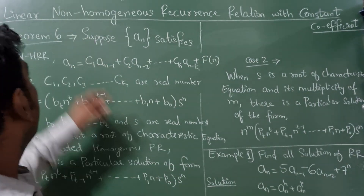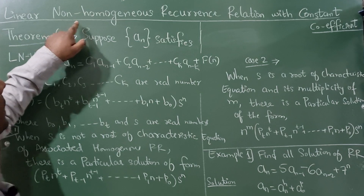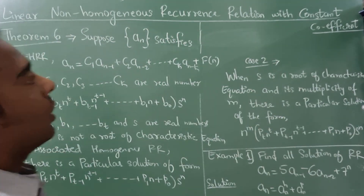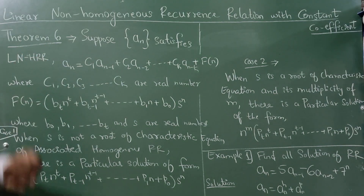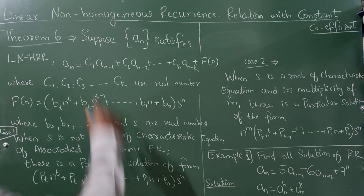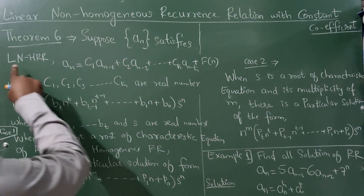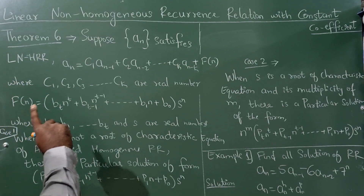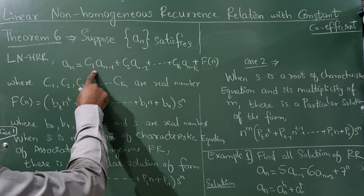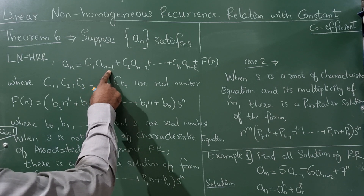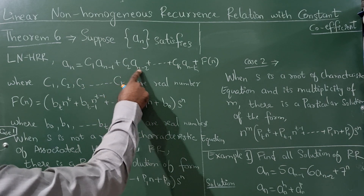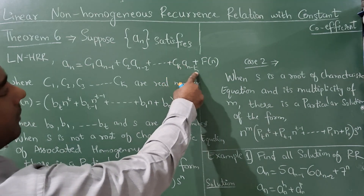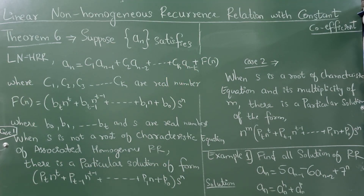Hello everyone, today I am going to explain linear non-homogeneous recurrence relation with constant coefficient, Theorem 6. Suppose a(n) satisfies the linear non-homogeneous recurrence relation: a(n) = c1·a(n-1) + c2·a(n-2) + ... + ck·a(n-k) + f(n).